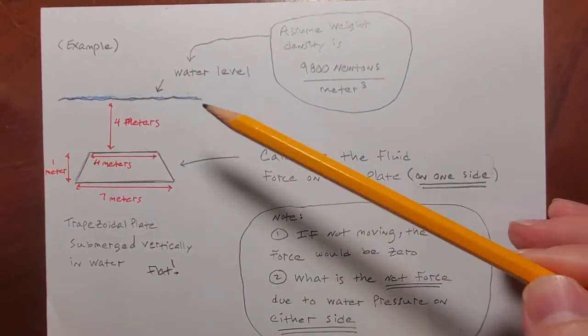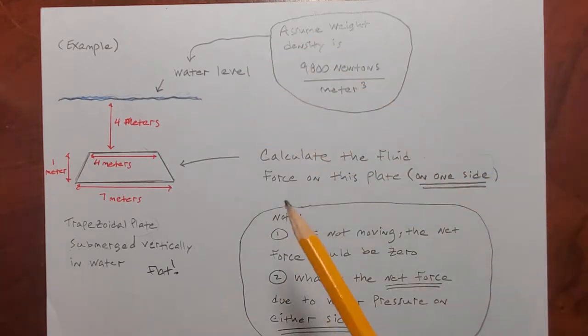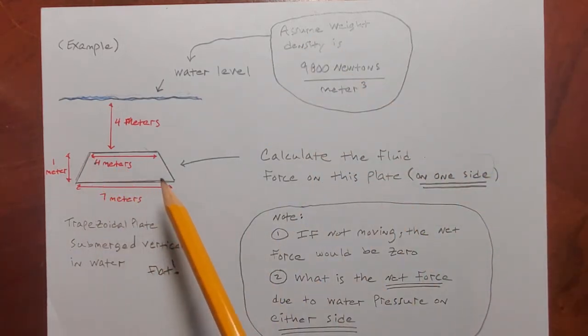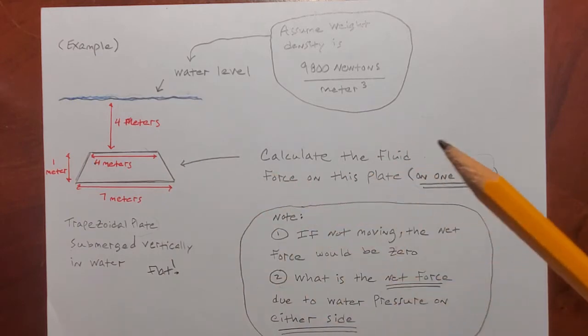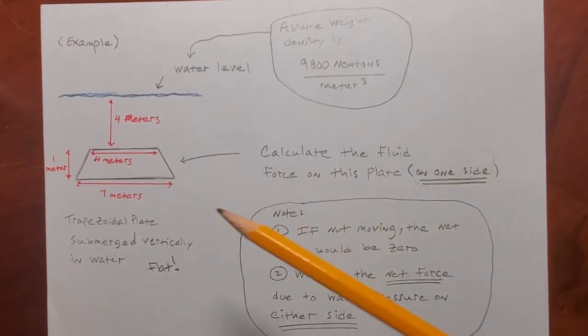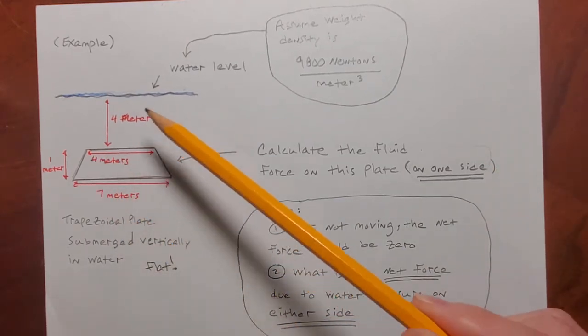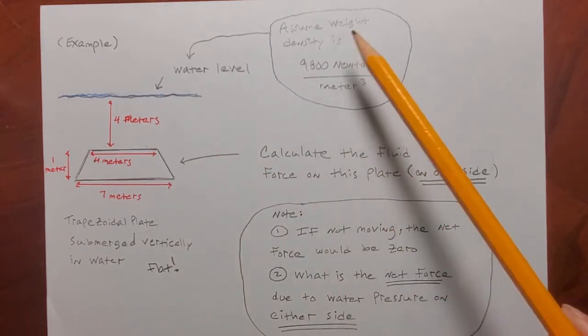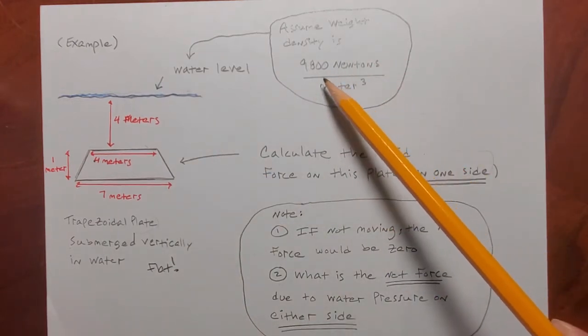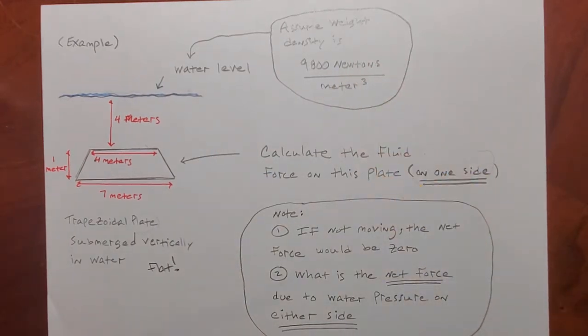So here's a problem that I did in another video. We wanted to find the fluid force on just one side of this plate that was submerged in water. And it was submerged vertically and it was flat and all that. And I gave you the dimensions and told you how deep it was. And we were going to use the water density is 9,800 newtons per cubic meter and so on.